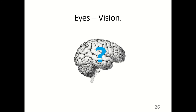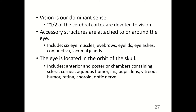Vision is our dominant sense — about half of the cerebral cortex is devoted to vision. Accessory structures include six eye muscles, eyebrows, eyelids, eyelashes, conjunctiva (the mucous membrane of the eyes), and lacrimal glands. The eye is located in the orbit of the skull and includes the sclera, cornea, aqueous humor, iris, pupil, lens, vitreous humor, retina, choroid, and optic nerve.